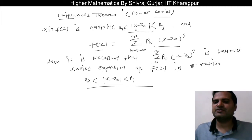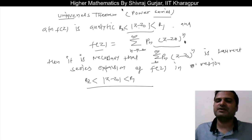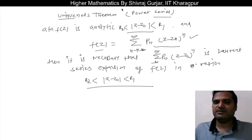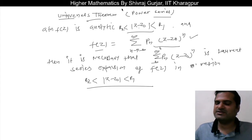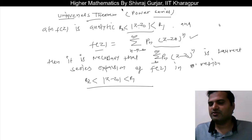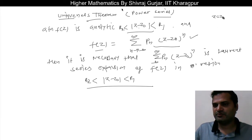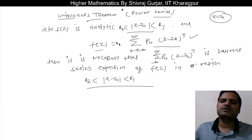So what this means is: if any function f(z) is analytic in the given region and we are able to represent it in this power series form by whatever method we could use, then by the Uniqueness Theorem - as the name suggests - that expression is nothing but the Laurent series expansion for f(z). The Laurent series expansion of f(z) is unique for a given point z equals z₀ in a given region.